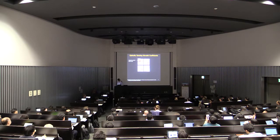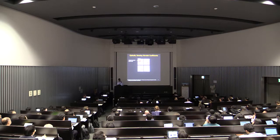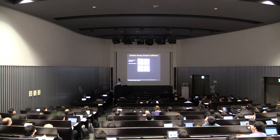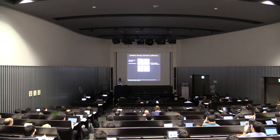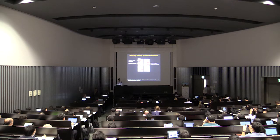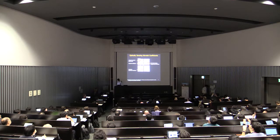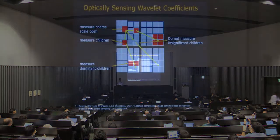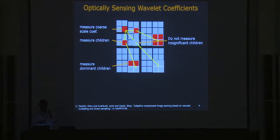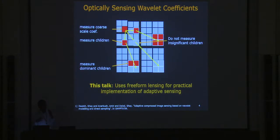The idea is that using some sensing hardware, you measure a coarse snapshot of the image, and then use this to guide how you should sample thereon. You start with a low-resolution version, measure all the children, and if a child coefficient is very small — probably not an edge — you wouldn't measure anything at finer scale along that branch. On the other hand, if it's a dominant component, you measure along that branch. Combined with wavelet sparsity, you need very few measurements, and you know what kind of measurements to make a priori. This talk uses freeform lensing to practically implement this adaptive sensing.